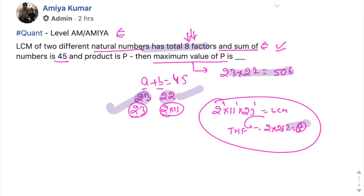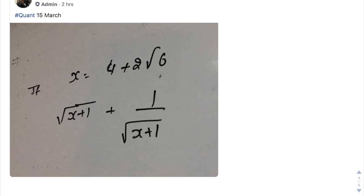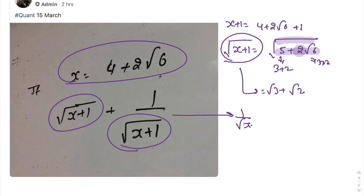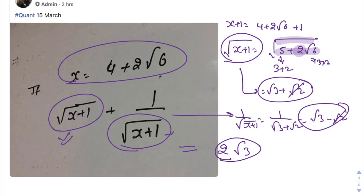Next question is quite easy. We have to find root of x plus 1 and 1 upon root of x plus 1. We have x equals 4 plus 2 root 6, so x plus 1 is nothing but 5 plus 2 root 6. To find under root of an irrational number which has 2 in front, generally this is a summation and product. So root x plus 1 is nothing but root 3 plus root 2, and 1 upon root x plus 1 is 1 upon root 3 plus root 2. If we rationalize we get root 3 minus root 2. When we add these two, root 2 and root 2 cancel out. Our answer is nothing but 2 root 3. To solve irrational numbers, you have to think from the left of the mind.